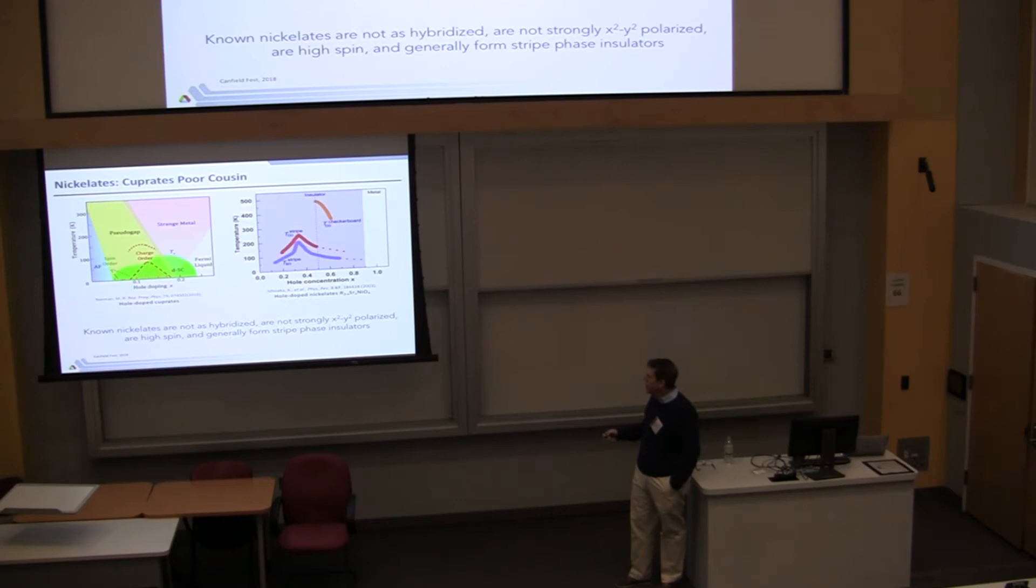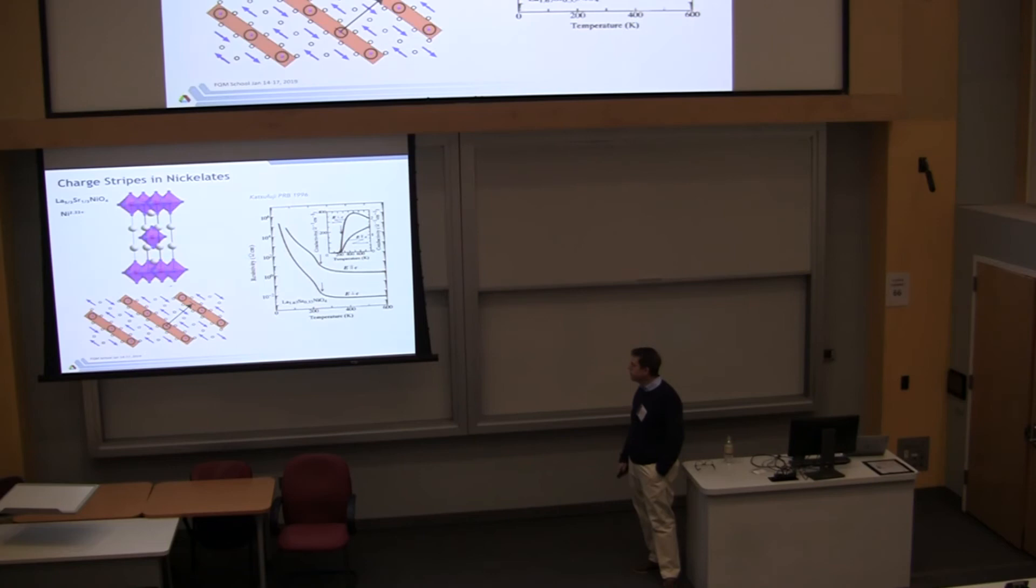So probably most of you weren't born when this phase diagram was discovered. This is 1986. So we're talking 32 years ago. So this phase diagram predates you. Well, not this particular one, but the discovery of high Tc superconductivity. But in those days people were looking for analogs and they started looking at nickel rather than copper. So nickel is just next door. And they never found superconductivity. In fact, what was always found was these insulators that had so-called stripes in them.